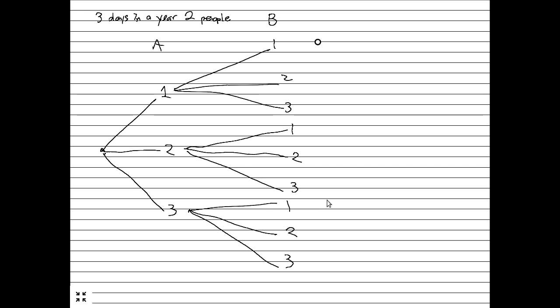We look at each leaf: (1,1), (1,2), (1,3). The question is: why are these tuples and not sets? Whether person A is born on day one and person B on day two is different from the reverse — so ordering is important, which is why we use tuples. They can both be born on the same day, so you can't use a set either. The nine outcomes are: (1,1),(1,2),(1,3),(2,1),(2,2),(2,3),(3,1),(3,2),(3,3).